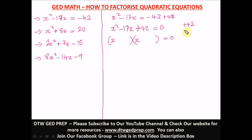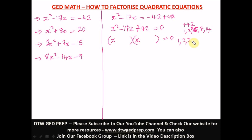Let's get the factors of 42: 1, 2, 3, 6, 7, 14, and 21. These are the factors of 42. Now ask: what two numbers from these factors can we add or subtract to give us negative 17 — the coefficient of x — and also multiply together to give positive 42?